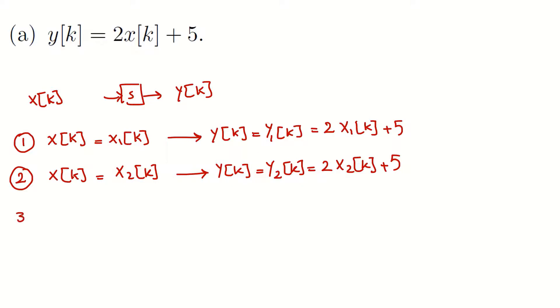Now I assume that input is a combination of the first and the second input. So I assume that the input xk is alpha x1k plus beta x2k.